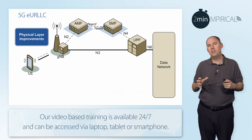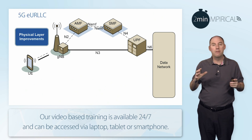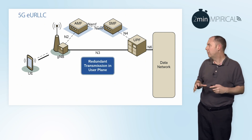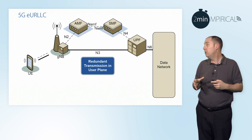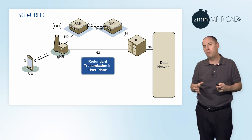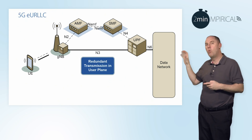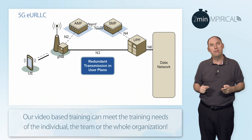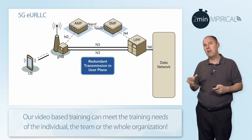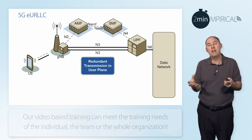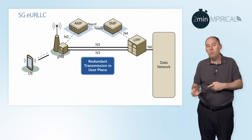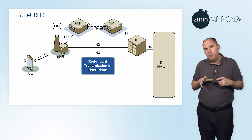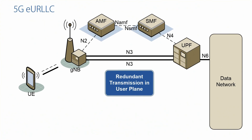There are lots of different things to assist in improving the overall radio interface with respect to this service. But it's not just about the air interface. Another area to look at would be features within the core to do with redundant transmission in the user plane. In this diagram you can see I've got one N3 connection — the N3 is the user plane between the gNodeB and the user plane function — but we can actually put multiple N3s in place for redundancy, such that if one is having a problem we've got another one in place.